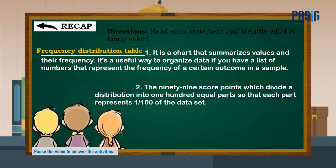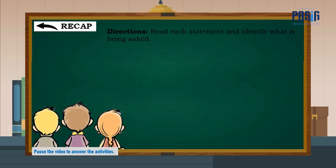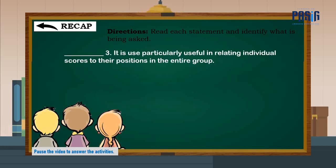Number two: the 99 score points which divide the distribution into 100 equal parts, so that each part represents one one-hundredth of the data set. The answer is percentile. Number three: it is particularly useful in relating individual scores to their positions in the entire group. The correct answer is percentile ranks.